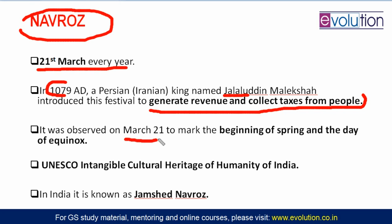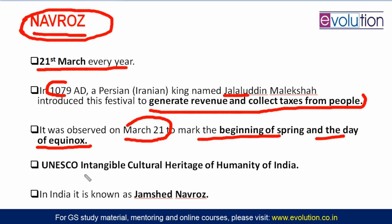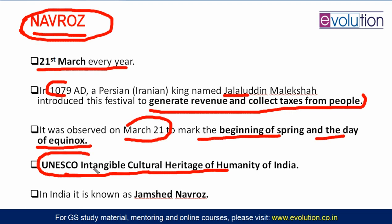March 21 is observed as the beginning of spring and the day of equinox. That is why on this particular day the Navroz festival is celebrated — to mark the arrival of spring. UNESCO has an intangible cultural heritage list, and Navroz is classified as an intangible cultural heritage of humanity by UNESCO — not only for India but also globally.